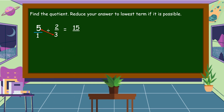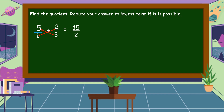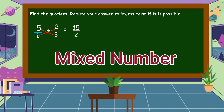So, five times three is equal to fifteen. One times two is equal to two. Tapos, evaluate natin ang ating sagot. Fifteen over two. Anong klaseng fraction ito? Ito ay improper fraction. So, lahat ng improper fraction ay gagawin natin mixed number para magiging lowest term.